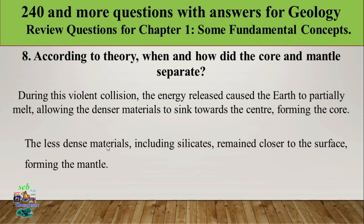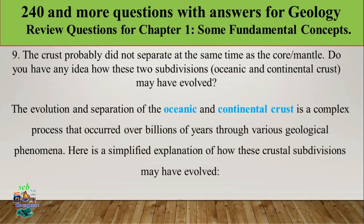The less dense materials, including silicate compositions, remained close to the surface, forming the mantle. So during early Earth formation, denser material moved toward the center and lighter, silicate-rich material stayed near the surface. The crust, however, did not separate at the same time as the core and mantle.